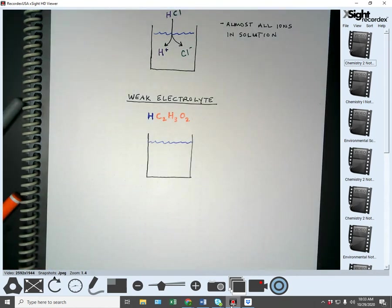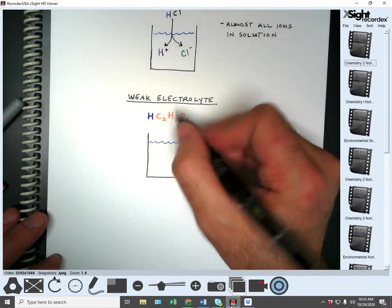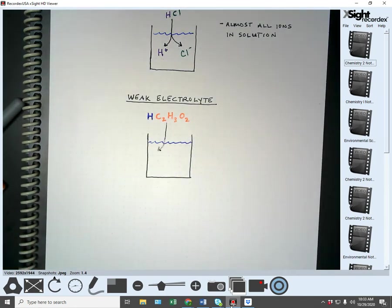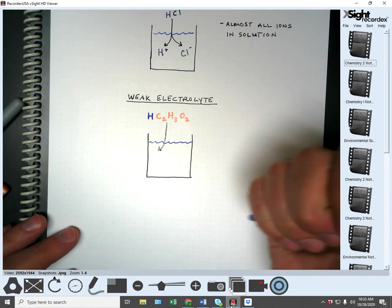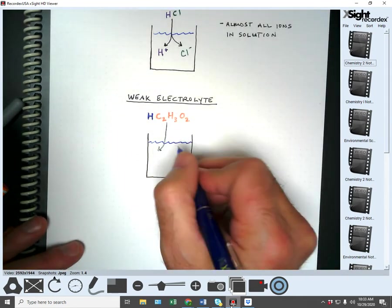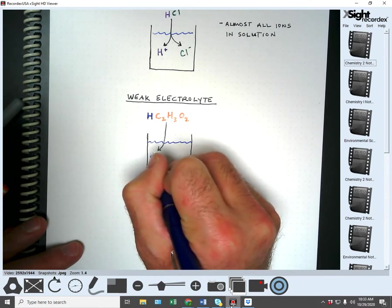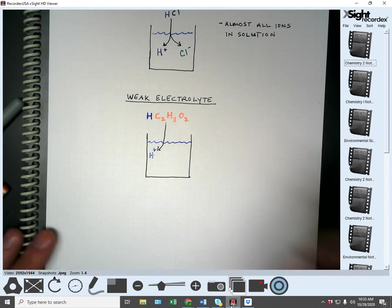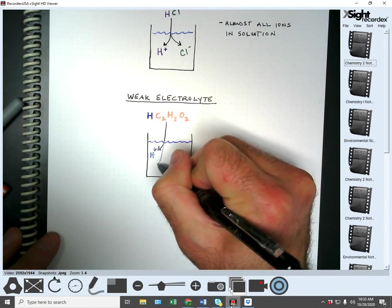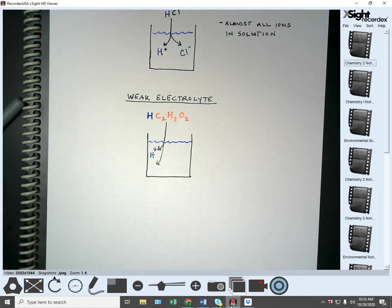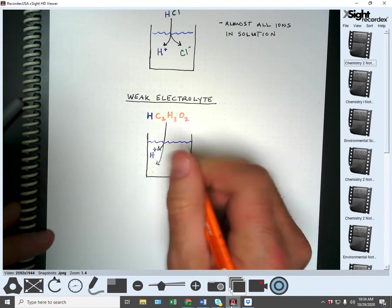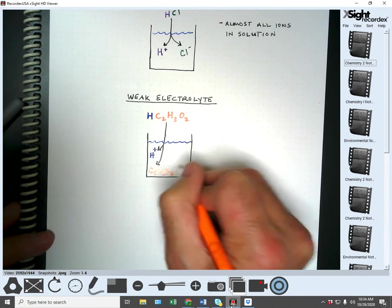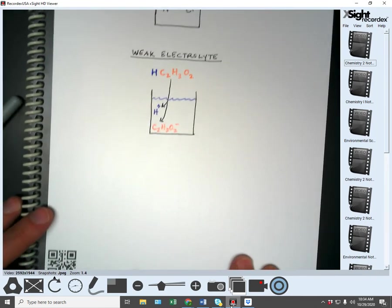When this enters, a weak electrolyte will actually do one of three things. Most of it, you will find, stays together as the... Some of it breaks into the ions, the H plus and the C2H3O2 negative one ions. Sorry for the glare.